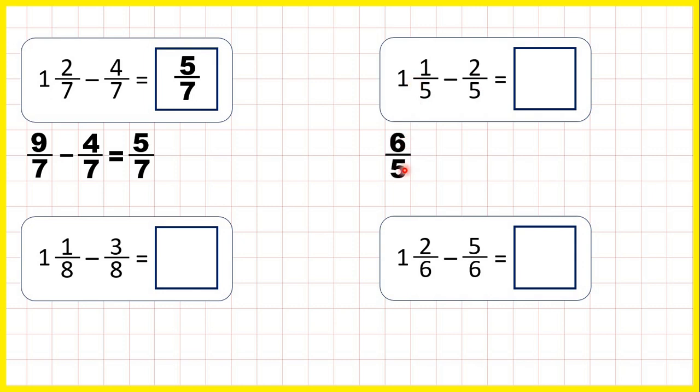That's six-fifths because one times five is five plus one is six, and the denominator stays the same. So now we can subtract two-fifths. The denominator stays the same in our answer, six minus two is four, so our answer is four-fifths.